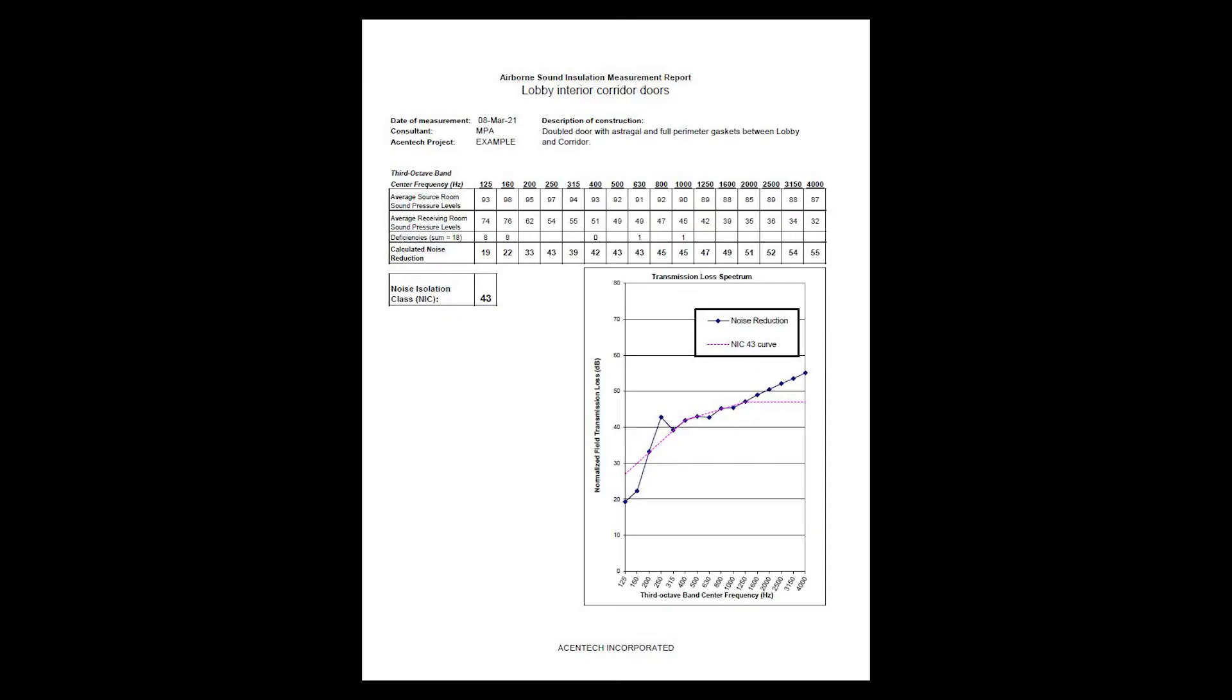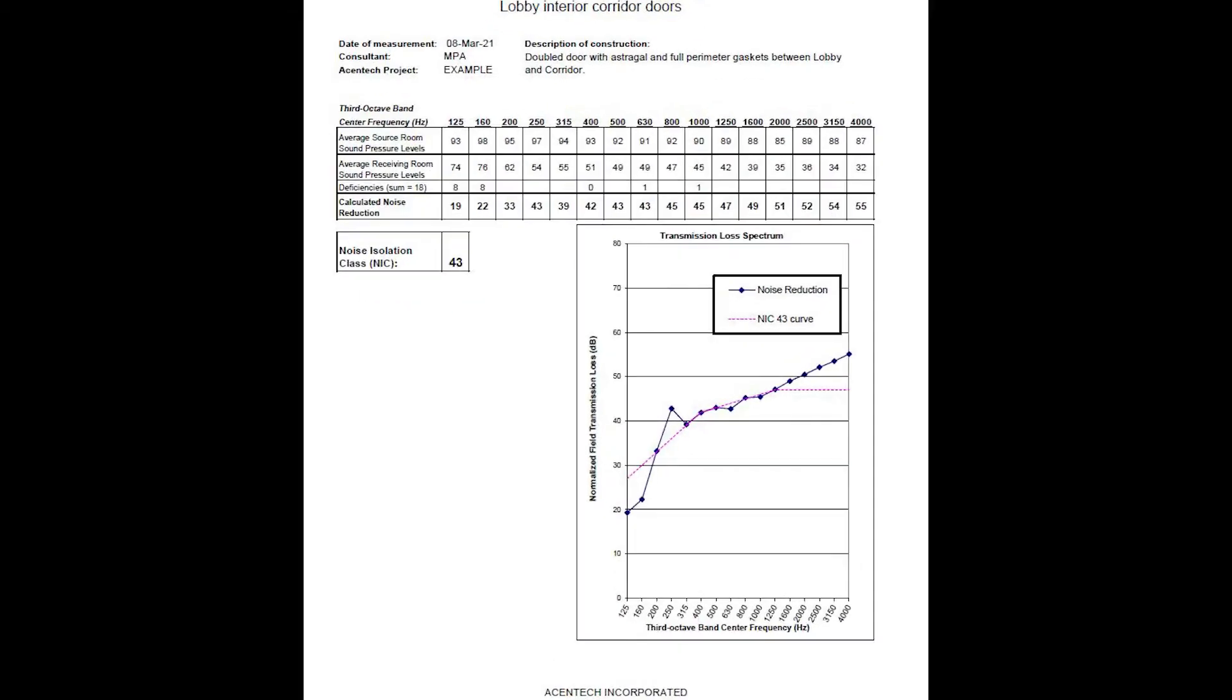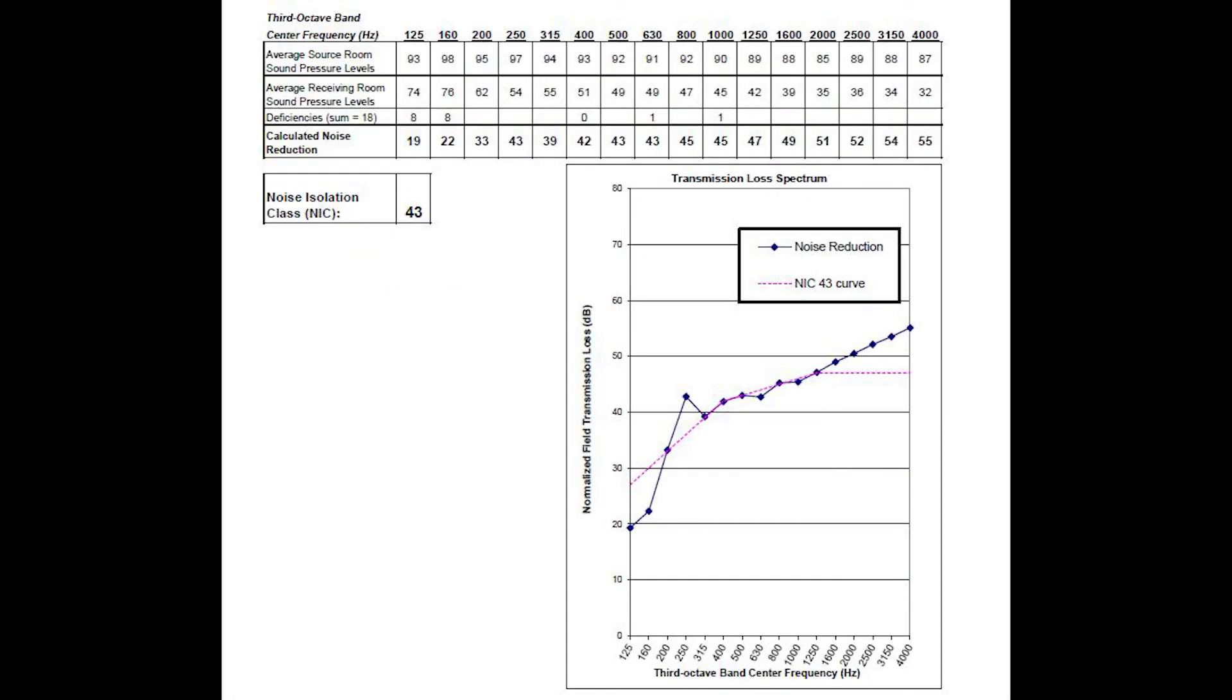Take, for example, a sound isolation measurement. We generally care about perceived isolation more than absolute isolation. So, we report transmission loss in third octaves, and because we report in third octaves, we use pink noise for a test signal.